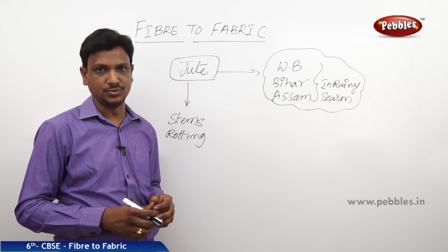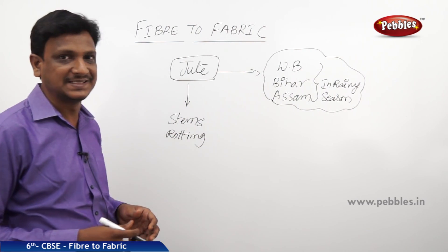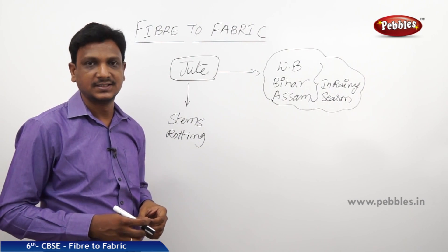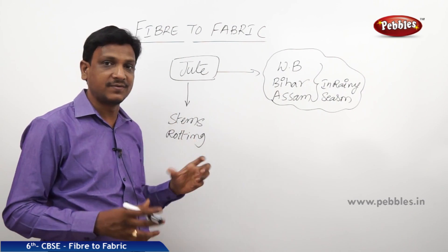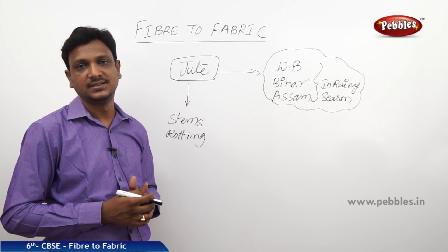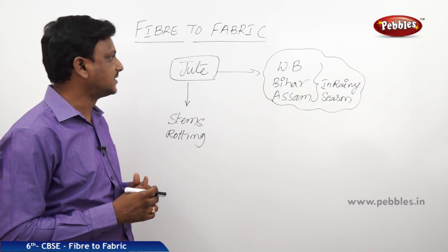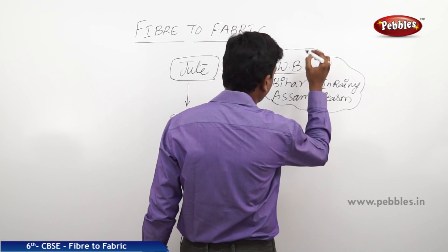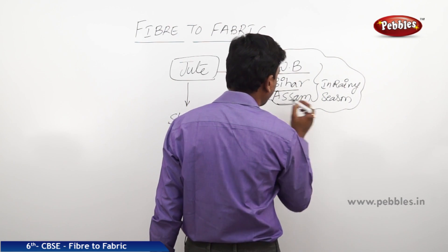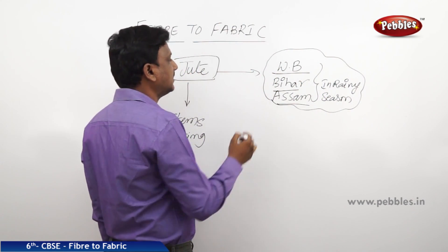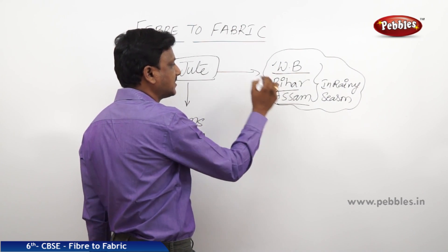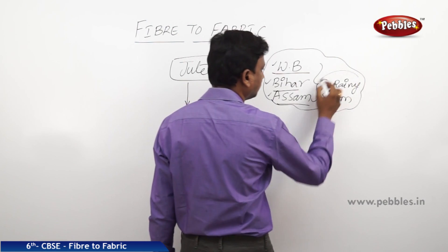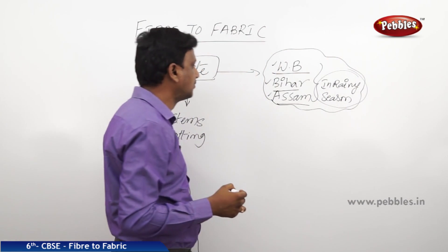Jute is obtained from the stem of the jute plant, whereas cotton is obtained from the fruit of the cotton plant. Jute plants are generally grown in states like West Bengal, Bihar, and Assam. They are mostly grown in the rainy season, which is the climate required to grow them.